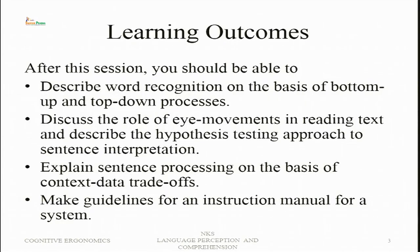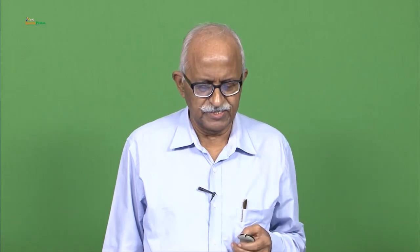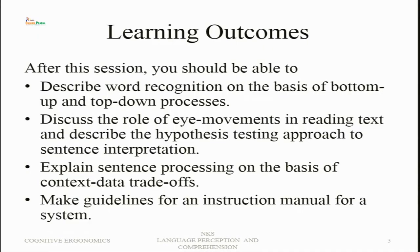We will look at sentence processing in terms of bottom-up and top-down processes, and see how the context-data trade-off occurs. Bottom-up processing involves data in the form of features of words, words formed from letters, and then sentences. Context is the entire context in which the text appears — context for each word, each sentence, and finally the broad context created by the entire text. On the basis of these, we make guidelines for an instruction manual for a system.